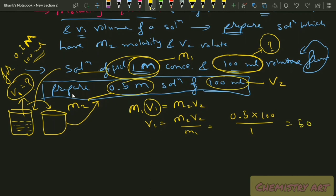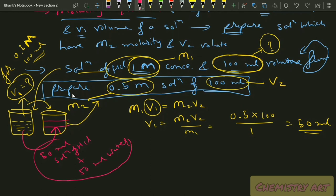The answer is 50 ml. So take 50 ml of the HCl solution, then add 50 ml of water to it (since we are diluting), to make up a total of 100 ml. The resulting solution will have molarity of 0.5 M. This is how a solution is prepared.